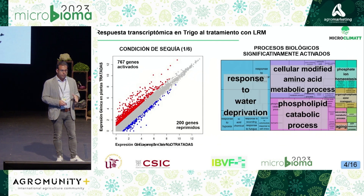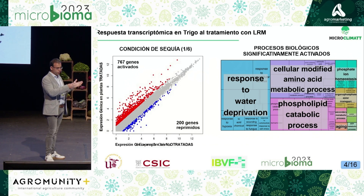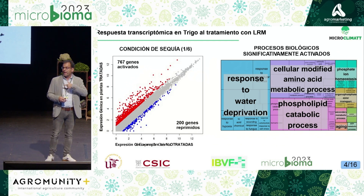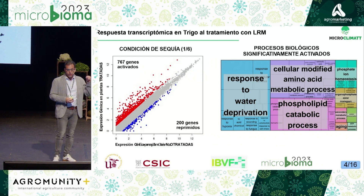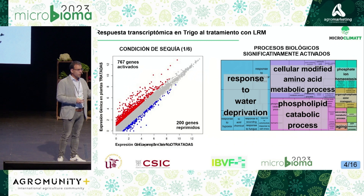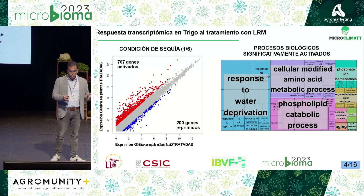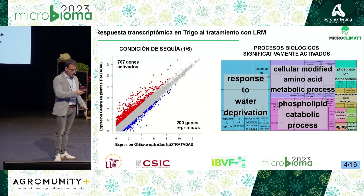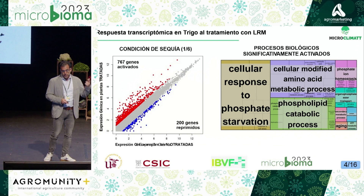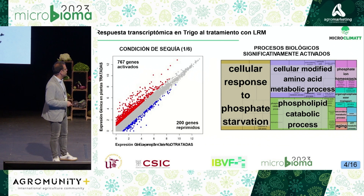We then applied artificial intelligence techniques to represent the available information about these genes at the level of gene ontology. We found that these genes were not randomly distributed in the plant's functions, but were primarily focused on the responses to water deprivation. In other words, plants treated with a biostimulant exhibit a stronger response to water shortage than untreated plants, even though both were subjected to drought conditions. We also observed other processes involved in development, such as accelerated plant development, which was a positive outcome. Additionally, we found positive changes in plant metabolism, particularly the assimilation of phosphate.